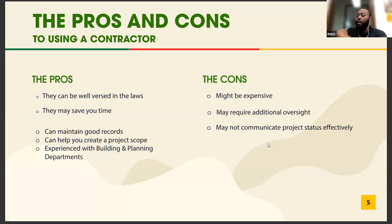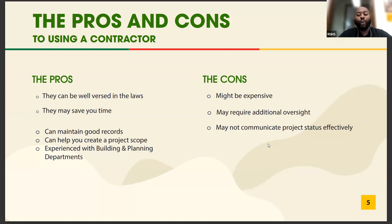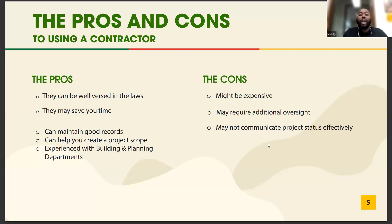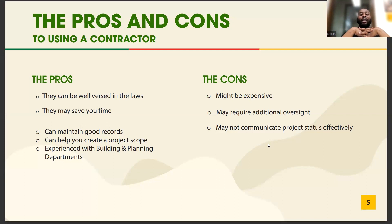Some cons: contractors might be expensive. Every contractor has their own hourly rate tied to the cost of building in a given city. It may cost $450 per square foot to build in Oakland versus $300 in Stockton, but the contractor's hourly rate may be the same regardless. Always get two to three quotes no matter how much you like a contractor.